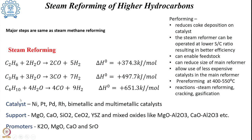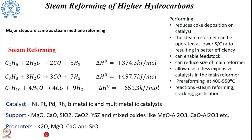For this particular reforming process, several catalysts have been studied, including nickel, platinum, palladium, rhodium, bimetallic catalysts, and multi-metallic catalysts on supports like magnesium oxide, calcium oxide, silica, cerium oxide, yttria-stabilized zirconia, and mixed oxides such as magnesium oxide-alumina and calcium oxide-alumina. Different promoters which have been used for the reforming reaction include K₂O, MgO, calcium oxide, and strontium oxide.